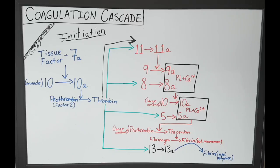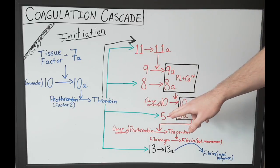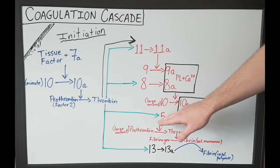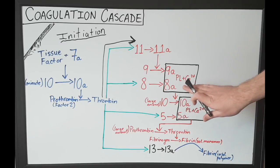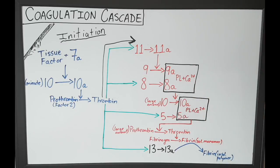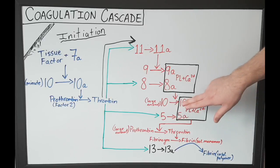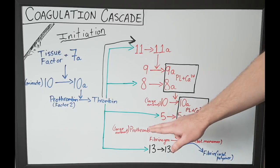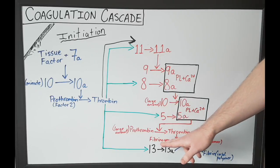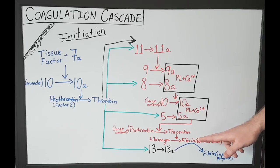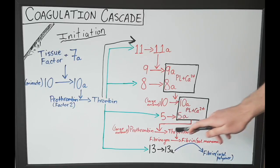Once you've got large amounts of activated factor 10, thrombin has already activated factor 5 to activated factor 5. So you'll have large amounts of activated factor 10 and activated factor 5, and along with phospholipids and calcium, these will all form a complex which will convert large amounts of prothrombin to large amounts of thrombin. Once you get large amounts of thrombin, they are going to convert fibrinogen to soluble fibrin monomers at this point.